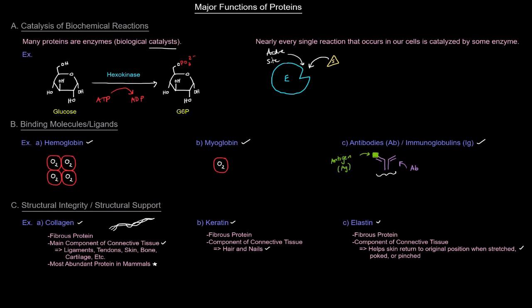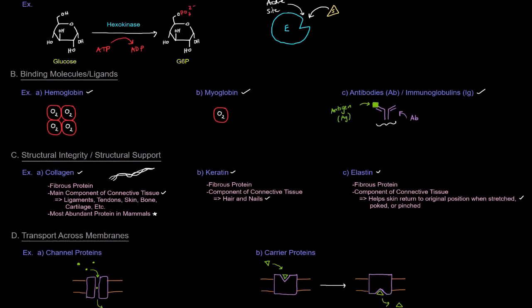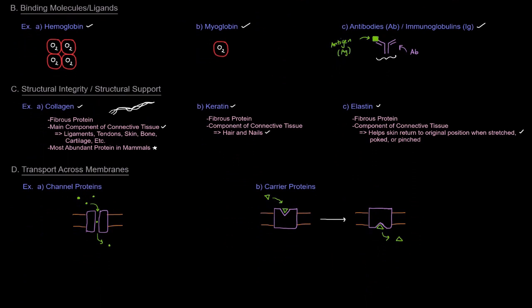So next up, another function is transport across membranes. So the idea here is that proteins can be involved in allowing some sort of substances or compounds or molecules to go from one side of a membrane to another side of the membrane. And that can happen in a couple of different ways. It can either happen with channel proteins or with carrier proteins.